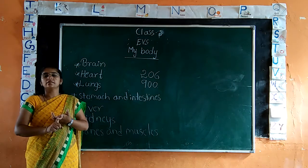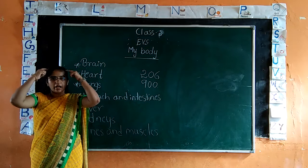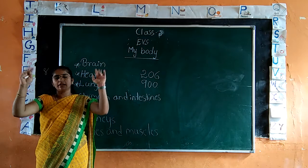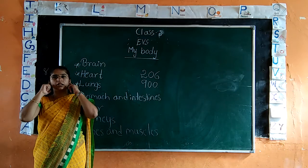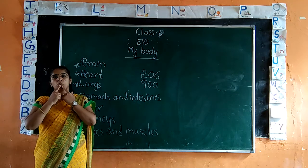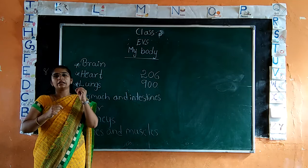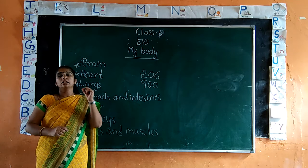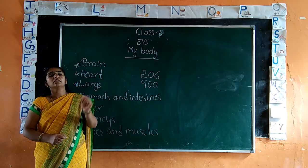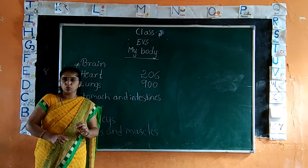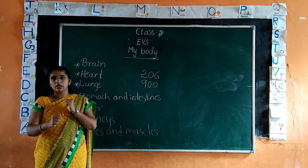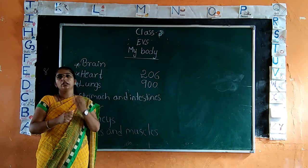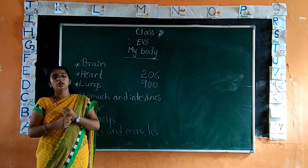External parts such as head, hands, legs, eyes, ears, and mouth. These are external parts. These parts help us to do everyday activities like running, holding, and eating.